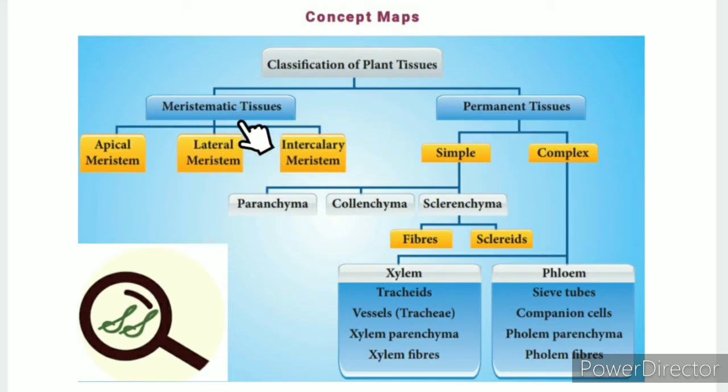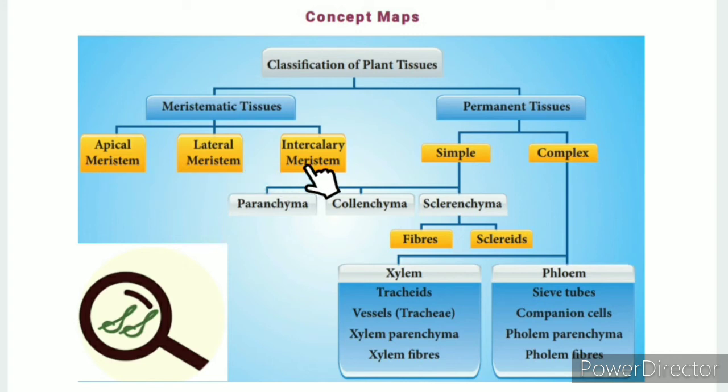Under meristematic tissues, we have three subtypes: apical meristem, lateral meristem, and intercalary meristem. We will now begin the introduction.